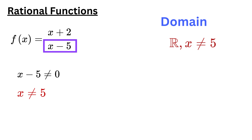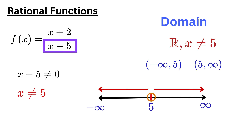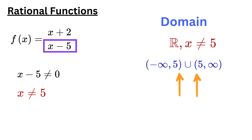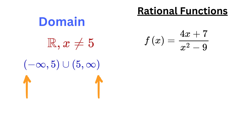To write the domain in interval notation, first represent it on a number line. A number line helps to clearly visualize which numbers are included and excluded from the domain. This is shown by an open circle at 5, and then shading the left and right of 5. So in interval notation, first write the left part as minus infinity to 5, then write the right part as 5 to positive infinity, and put a union in between. Note that this curved bracket means the number 5 is not included in the domain. Sometimes you will also find a square bracket, which means the number next to it is included in the domain. Note that parentheses are also used for negative and positive infinity, because they do not represent a specific point on a number line.